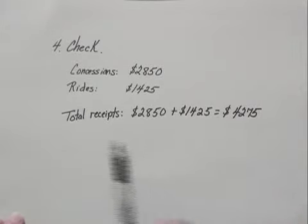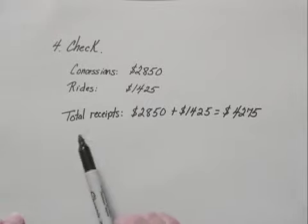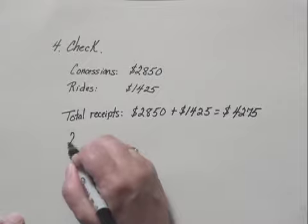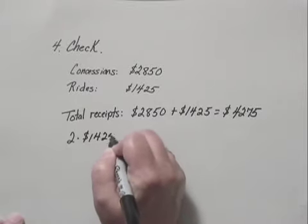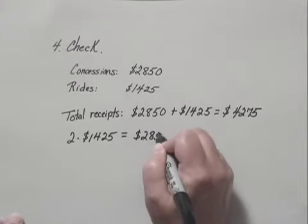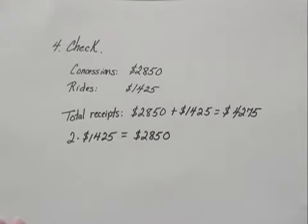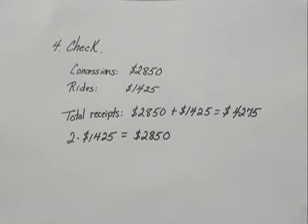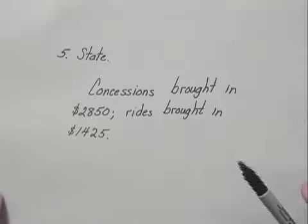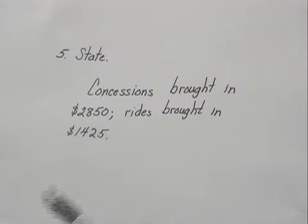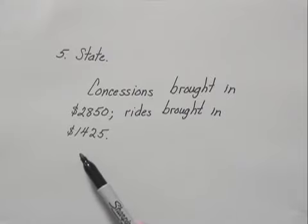The other thing we were told was that the concessions brought in twice as much as the rides. If we multiply two times 1,425, we get 2,850, which is the amount brought in from the concessions. So that statement also checks. Since these two values fulfill all the requirements of the problem, we state that the concessions brought in $2,850 and the rides brought in $1,425.